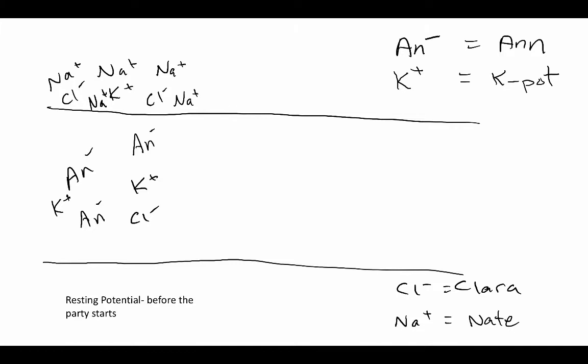I'm going to call sodium Nate for its chemical signal, Na. So Nate the sodium. Oh my gosh, Nate, such a positive guy. Positive, positive, positive all the time. And he is all over the place on the outside of that axon. And he can't get in. You know why? Because An's parents hate Nate. That's probably why they grounded her originally. And so they said, look, K-pot, he can come over. Clara, she can come over. But whatever you do, do not let Nate inside this house. So he's stuck on the outside.